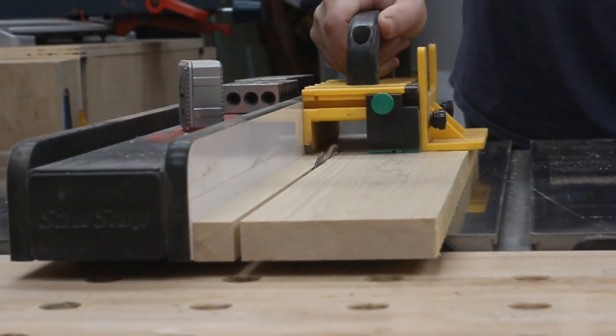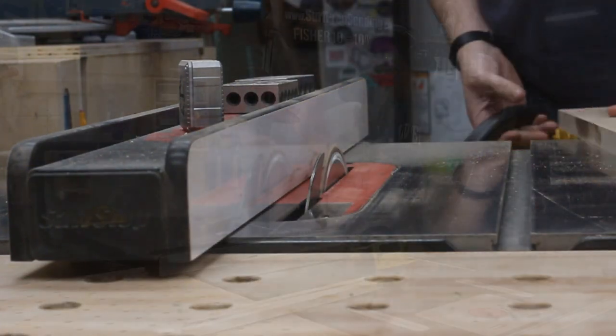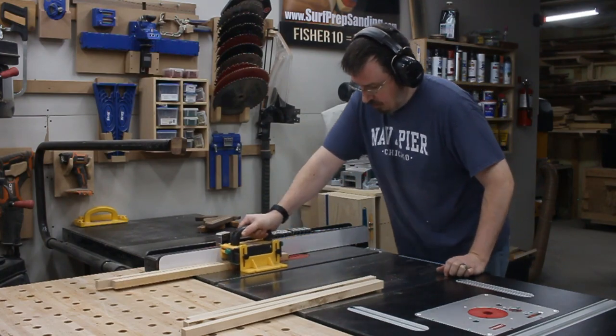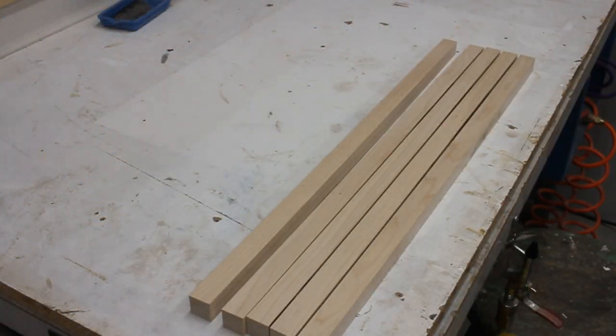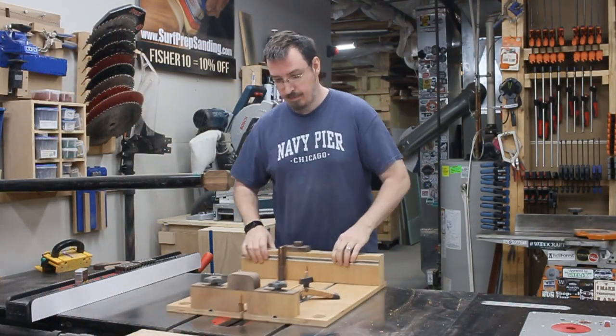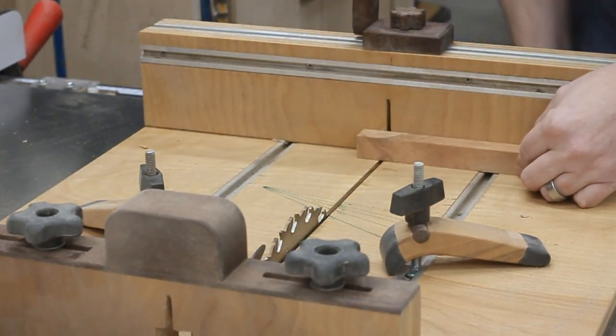Next, I could start to cut out the pieces for the first puzzle on the table saw. Basically, I just ripped the boards down into strips that are perfectly square. And I did this for a bunch of maple, cherry, and walnut. Now I could cut them to their proper lengths. So, I grabbed my crosscut sled.